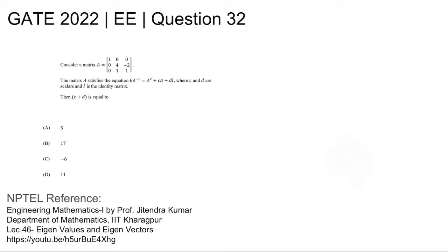This is GATE 2022 electrical question number 32. Consider the given matrix A which satisfies the equation 6A inverse equal to A square plus cA plus dI where I is the identity matrix of the same order as that of the given matrix A, and then c plus d is equal to. Four options are given.